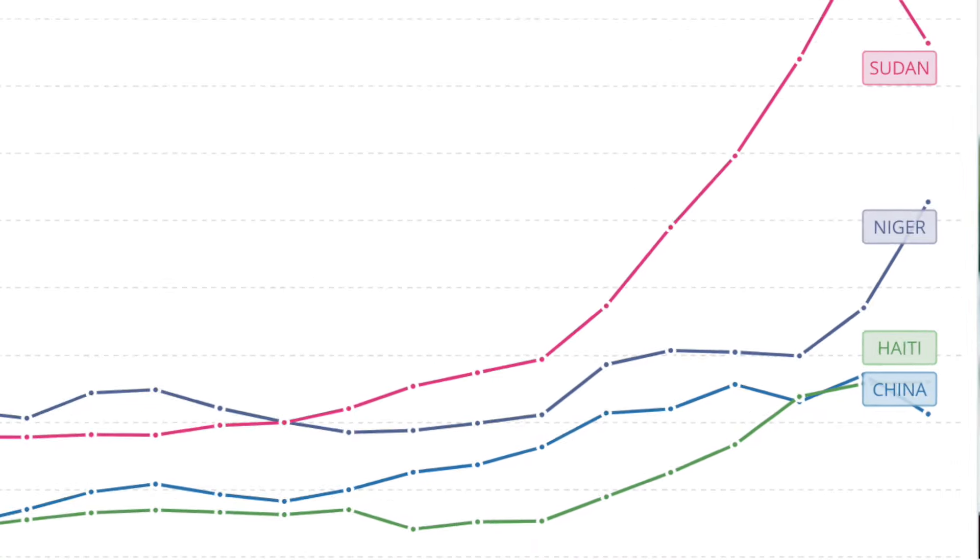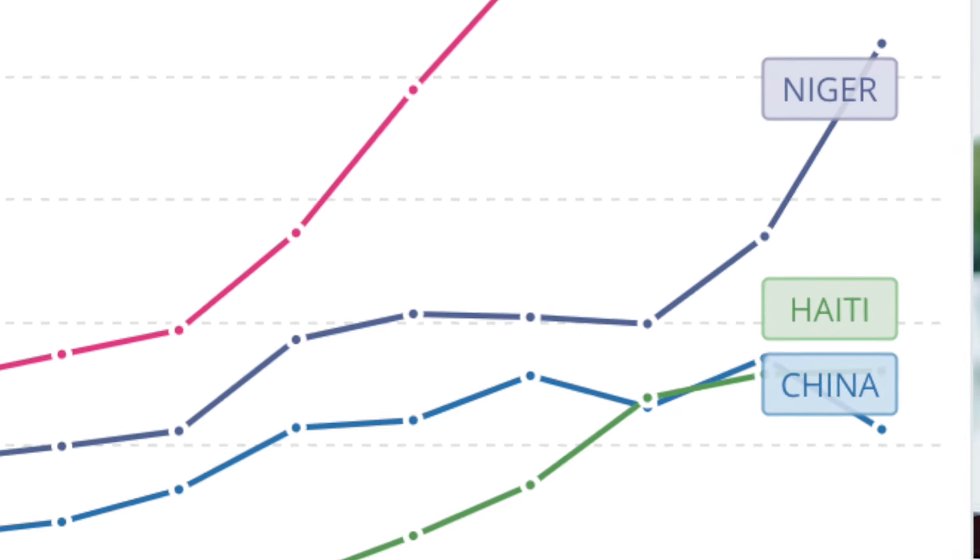So how did we do it? How did China transform from having one of the lowest GDP per capita?